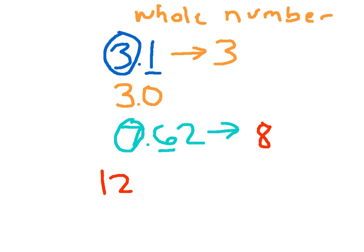I'm going to give you one last problem to look at here on this page. We're going to look at 12.36. For 12.36, nearest whole number — this is 12 and 36 hundredths. I'm going to circle the 2 because that's in the 1's place. I underline the 3. 0 to 4, circle stays the same. So the 2 stays the same.